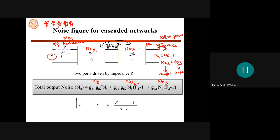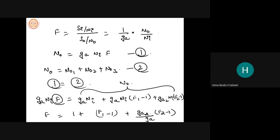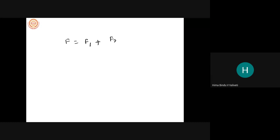The 1s cancel out, leaving the overall noise figure: F = F1 + (F2 − 1)/GA1. This is the Friis noise figure formula for cascaded two-port networks. The second stage noise figure is divided by GA1 because the gain of the first stage reduces the relative impact of the second stage noise.